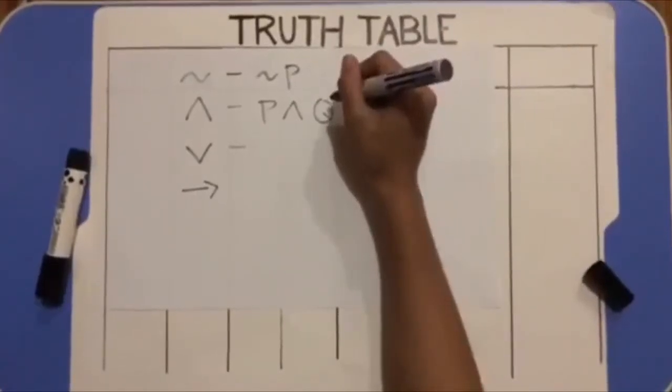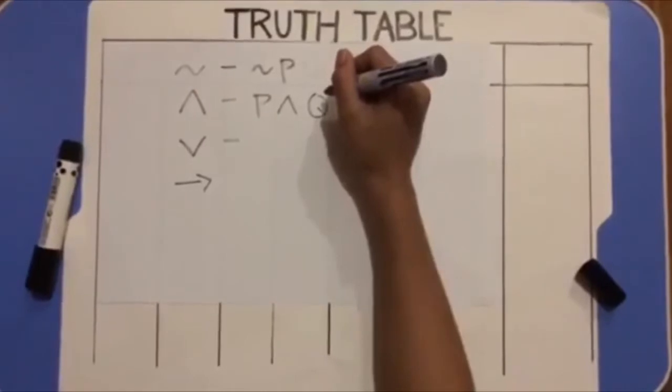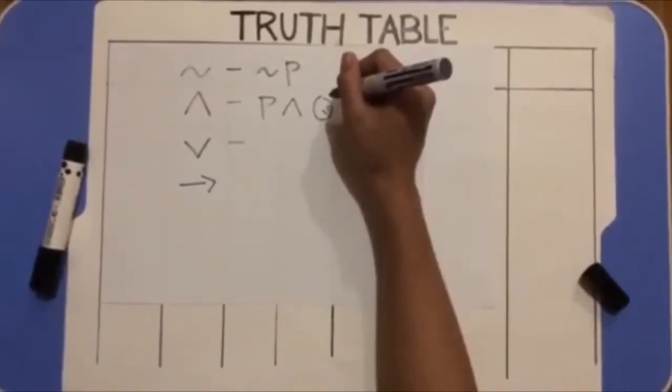Next is the and, P and Q. P and Q should be true when both P and Q are true and false otherwise.